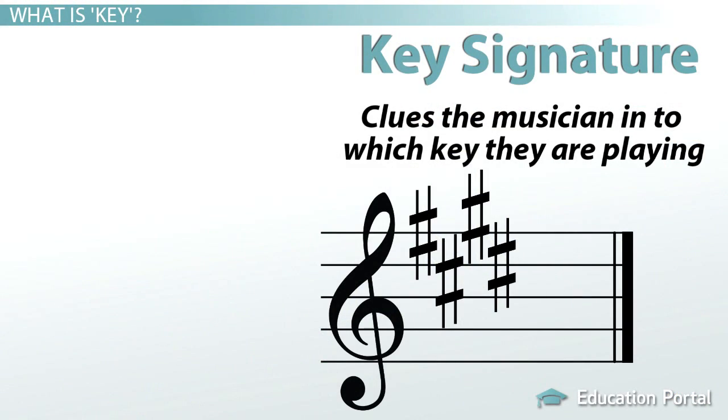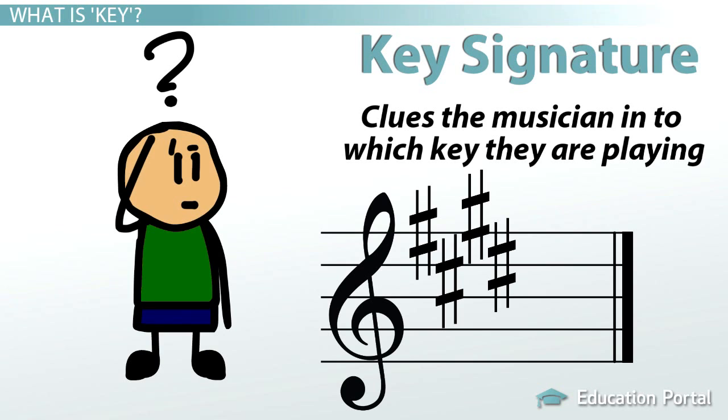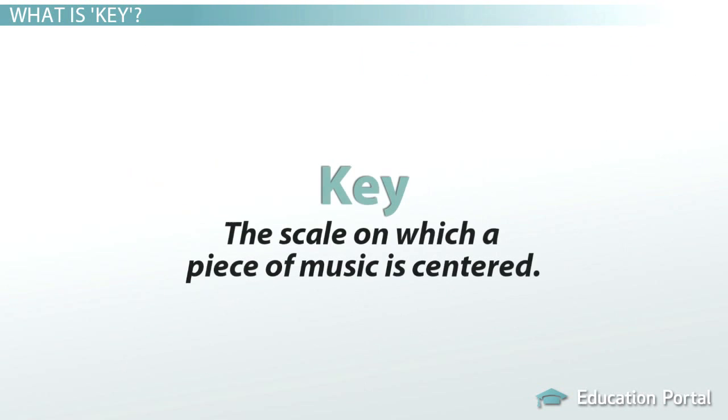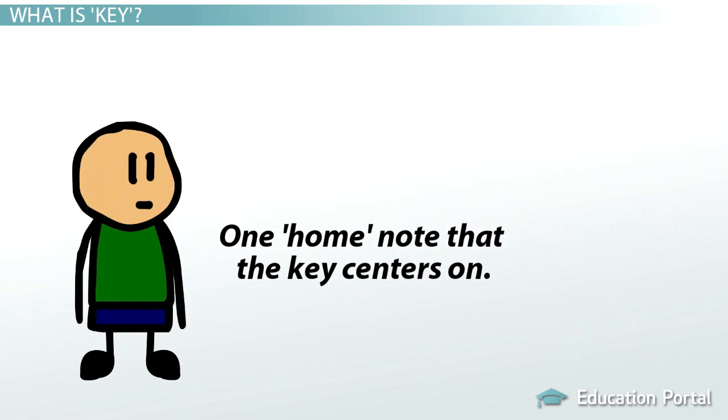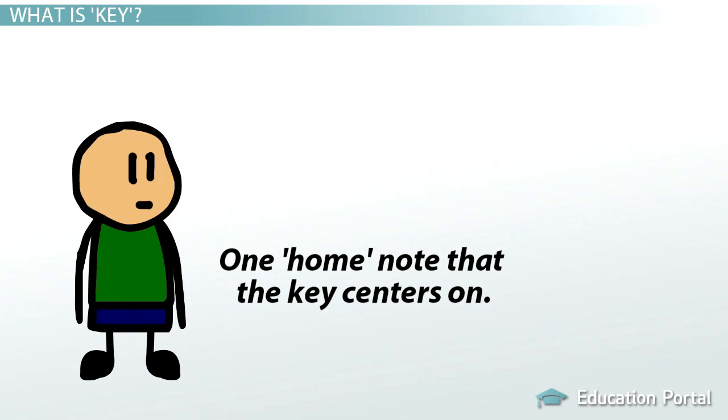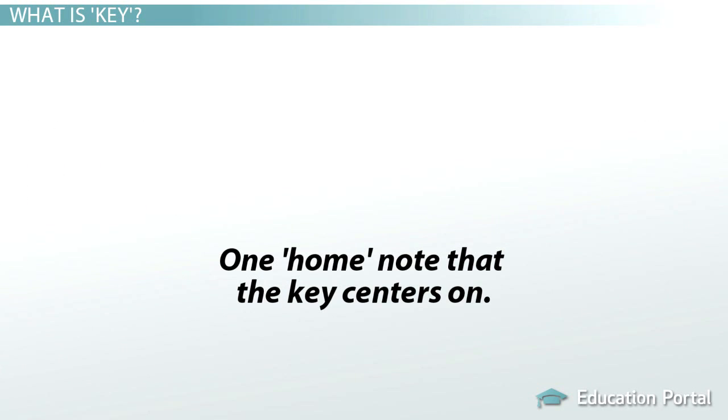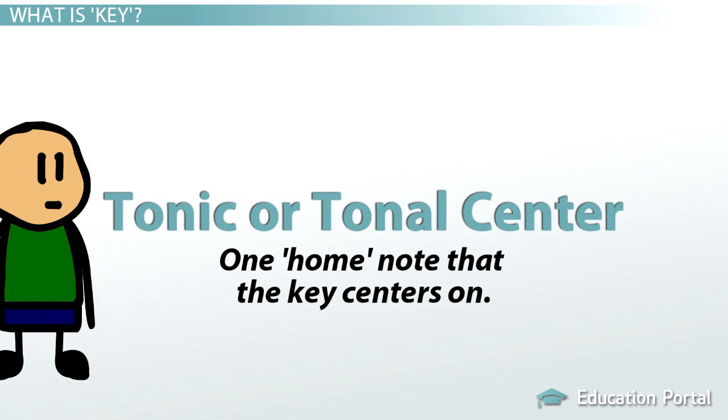The key signature also clues the musician in to which key they are playing. But what does that mean exactly? Key is the scale on which a piece of music is centered. Within this, there's usually one home note that the key centers on. This note is called the tonic, or the tonal center, and is most often the first note of the scale used in the piece.